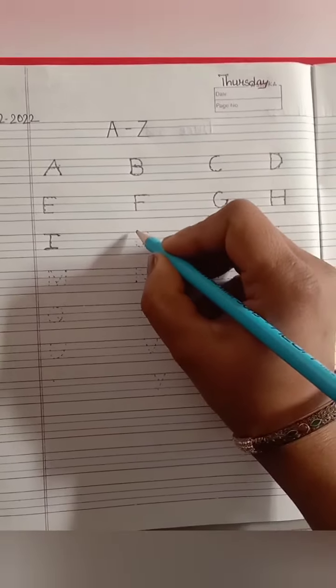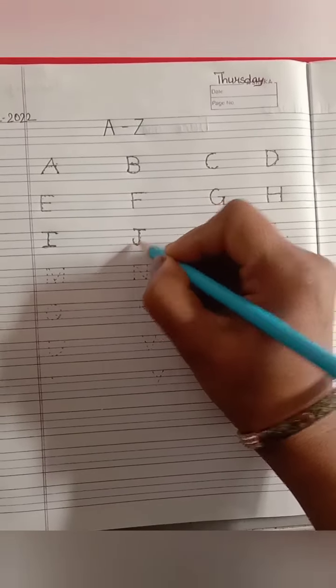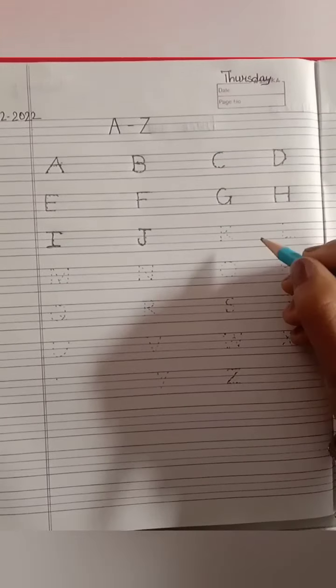Letter J. Sleeping, standing and curve. J says j.